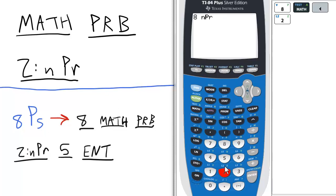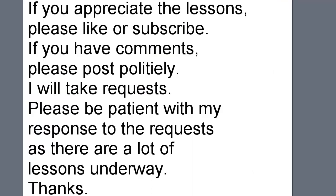So we went 8P5, so now we just press 5 and Enter. So a permutation of 8 items taken 5 at a time is 6,720.